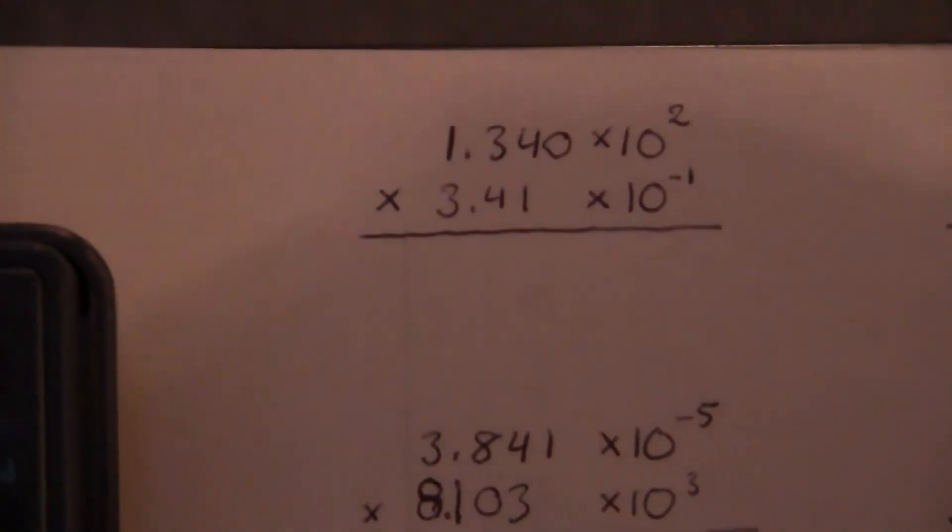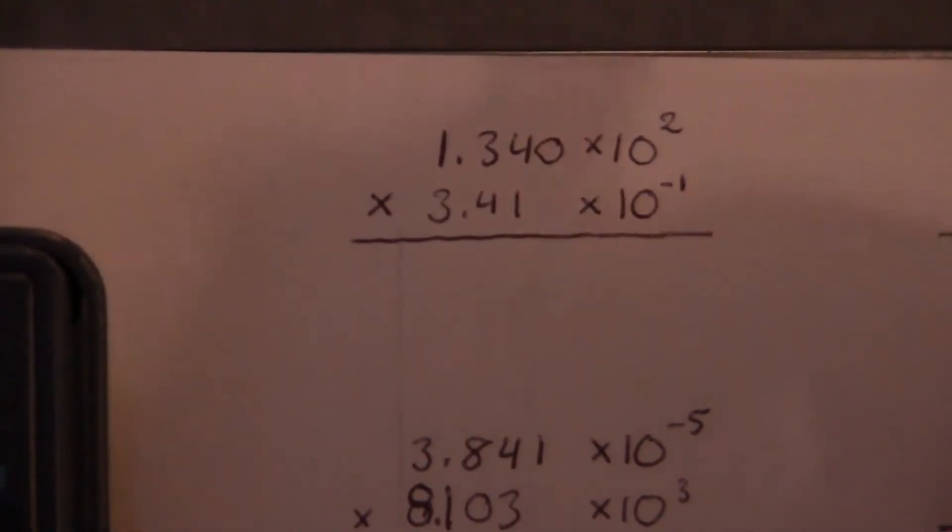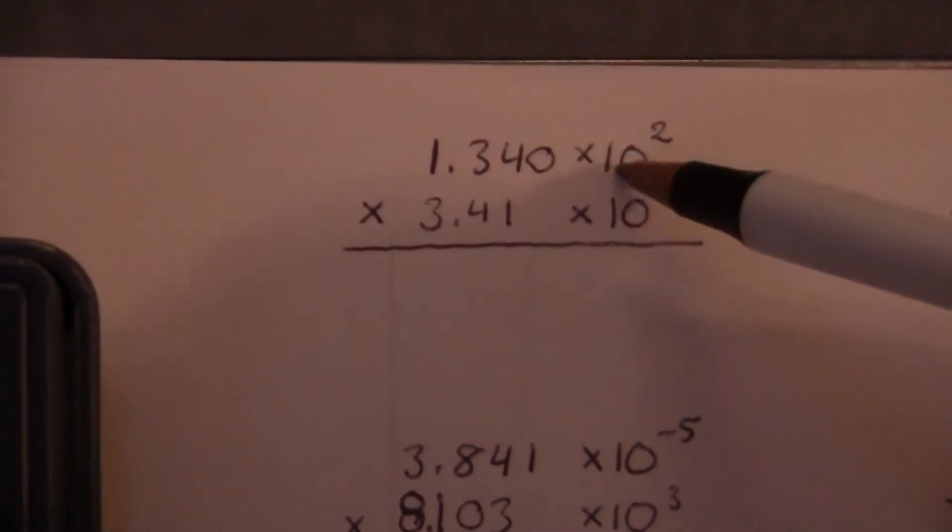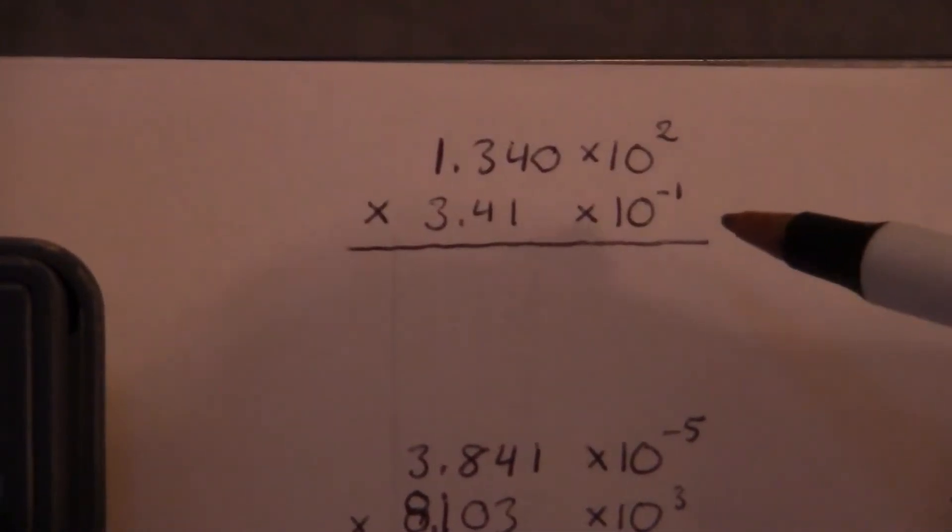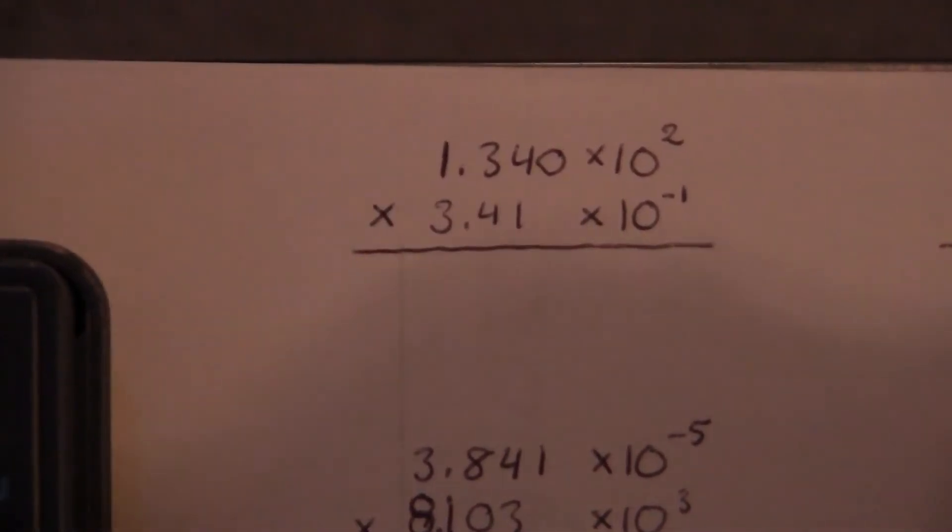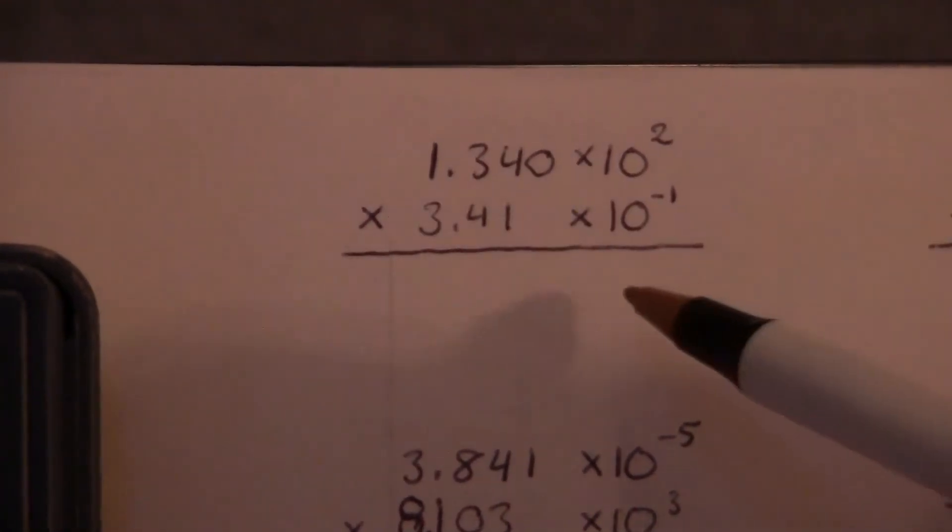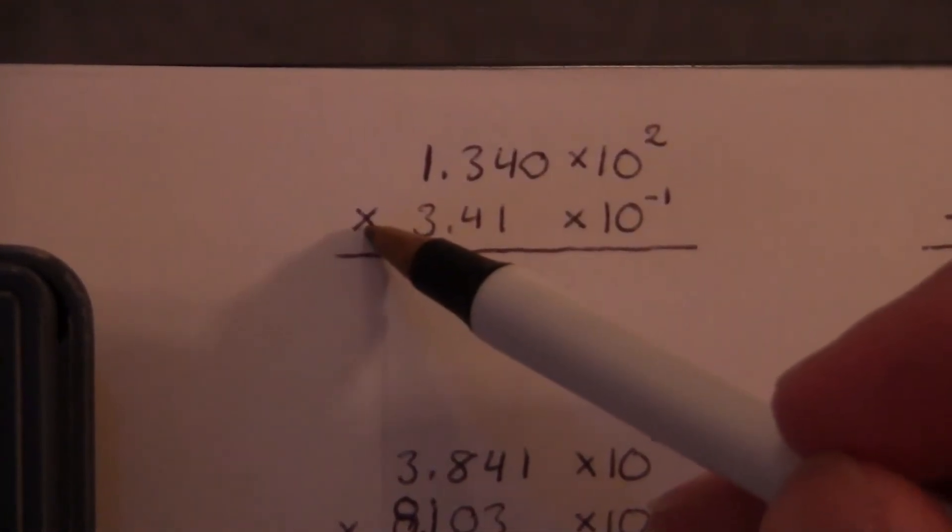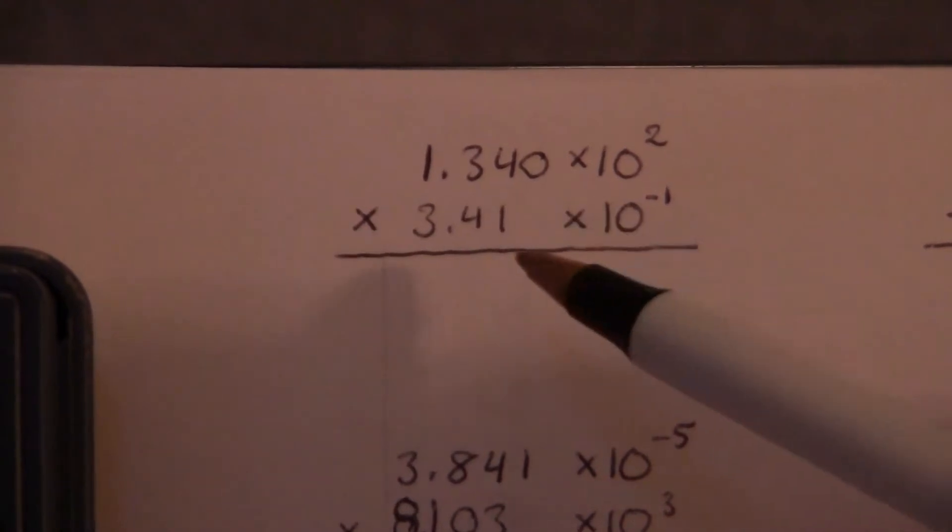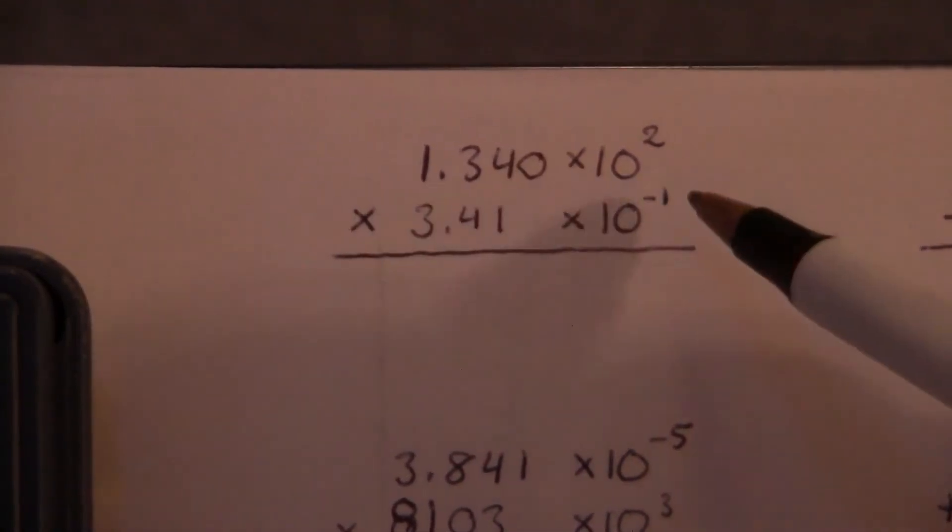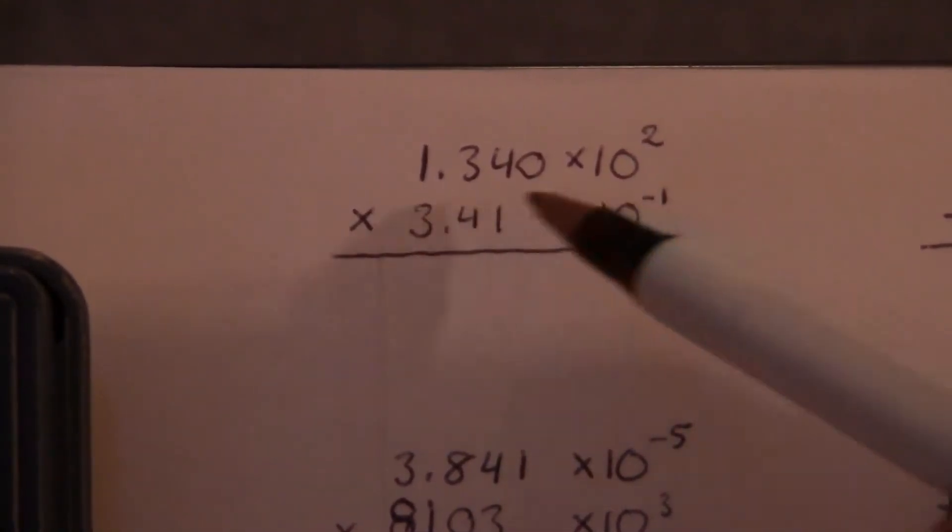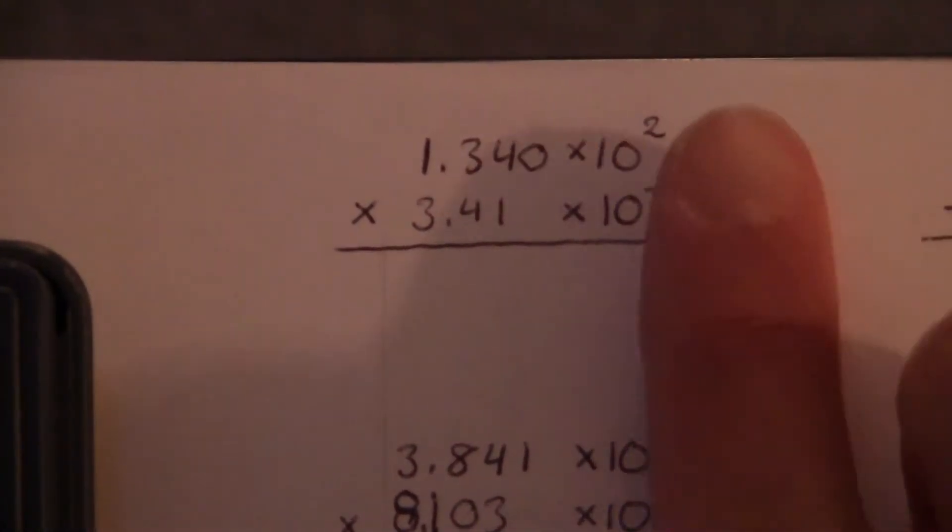Okay, so now we're going to do some arithmetic using scientific notation, numbers in scientific notation. When we're multiplying or dividing we're going to separate it out into two parts. We're first going to look at just the numbers and then we're going to look at just the exponents.